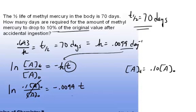This, of course, cancels. And so I'm left with the natural log of .1 divided by negative .0099, solving for t, t equals 233 days.